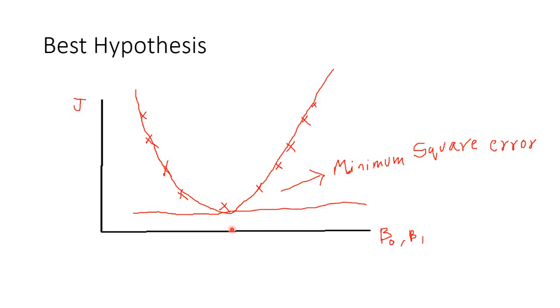The corresponding hypothesis is best suited to our data and can be used to predict the target value. That is the purpose of understanding the cost function and how we use it to come up with the best regression line or hypothesis.